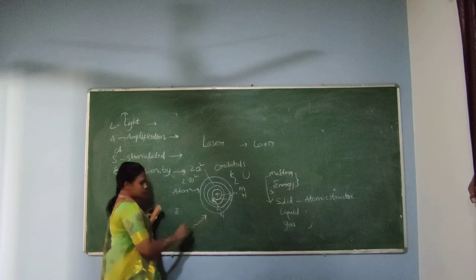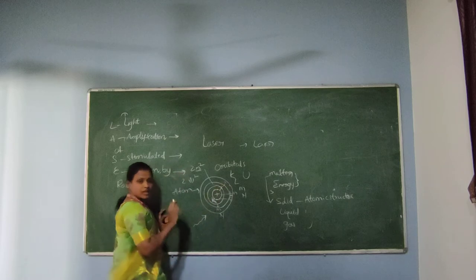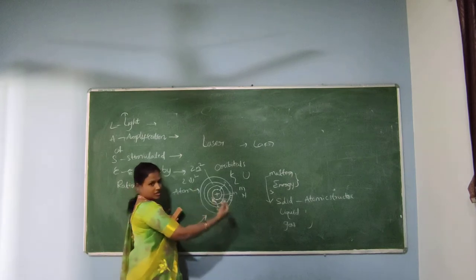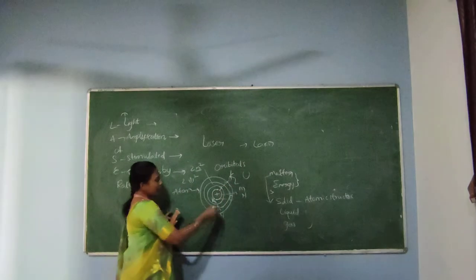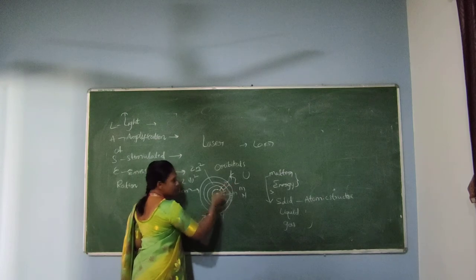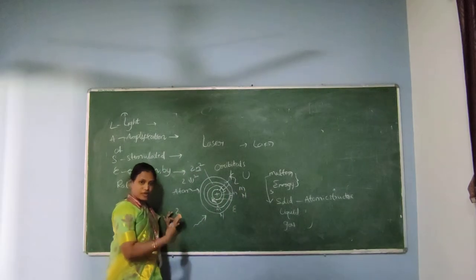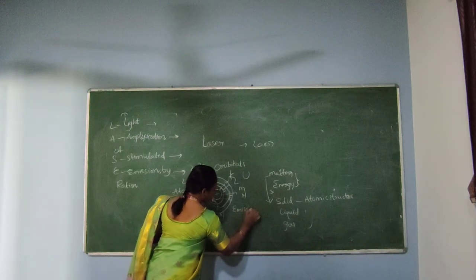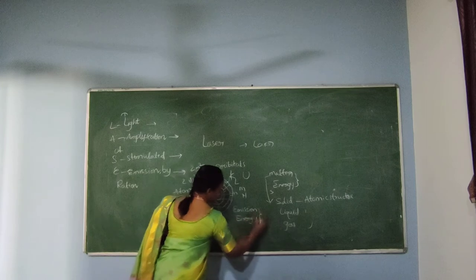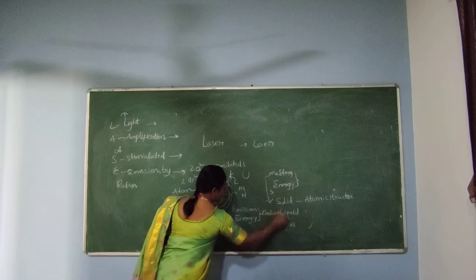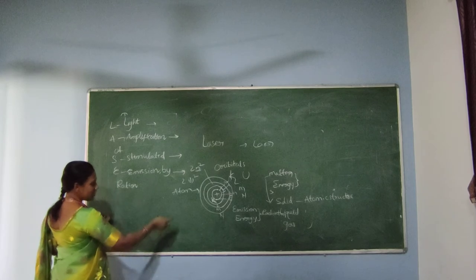When external energy is applied or supplied to the atomic structure, the energy levels go to the excited state — meaning electrons jump from a lower level state to a higher level state. In the excited state, there is no longer time; the atom will transition from the excited state back downward. At that time, it releases some energy — that is called emission of energy or emission of radiation. This process is called radiation.